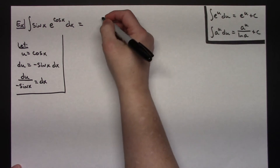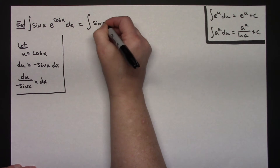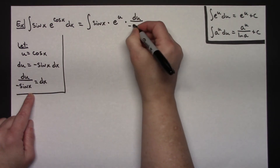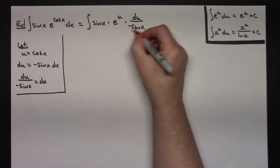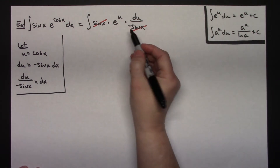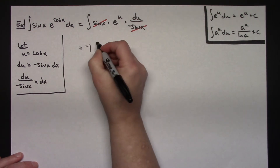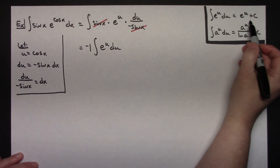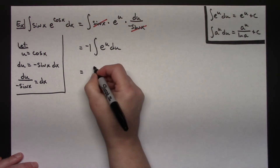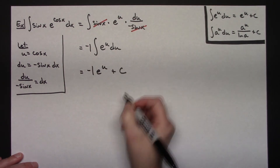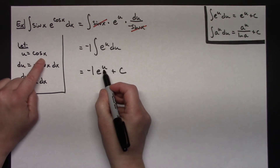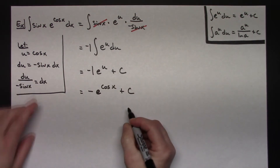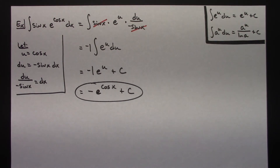Coming up here and doing some substitutions, I will have the integral of sine x times e to the u, and substituting in dx I have du over negative sine x. The sine x's are going to cross out, and I still have a negative left in the bottom, so I can pull that negative one out in front of the integral. I will be down to integrating e to the u du, which is what we wanted. Integrating e to the u du is e to the u plus c, so I have negative one times e to the u plus c. Replacing u: negative e raised to the cosine x plus c.